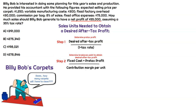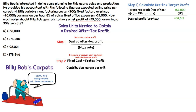Step one is where we calculate the pre-tax target profit. If the desired after-tax net profit is $55,000 and our tax rate is 35%, to get that desired profit on a pre-tax basis we take $55,000 and divide by one minus the tax rate — that's $55,000 divided by 65%, giving us a desired pre-tax profit of $84,615. You can check your math by taking $84,615, multiplying by 35% to get the taxes, subtracting that, and you'll get back to the desired after-tax profit of $55,000.